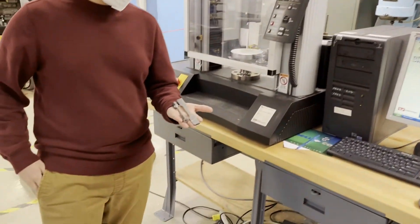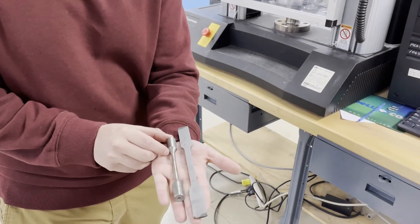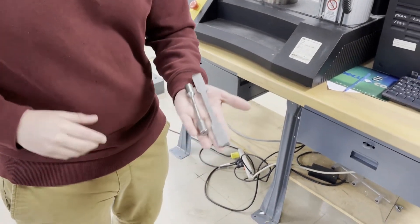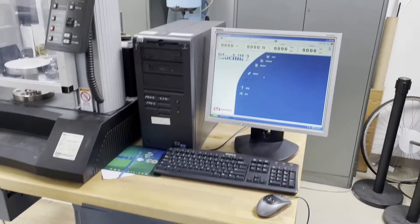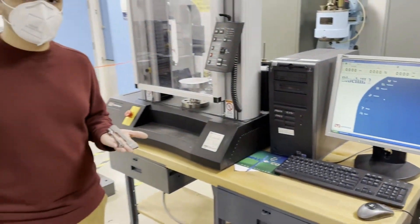We can use this to test compression and tension tests on different shapes of coupon samples. This is something that you're going to be looking at and using thoroughly throughout your co-op experiences.